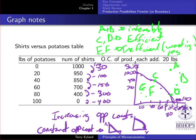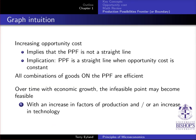The only way that we could achieve points outside here is if technology or something else improves. So as I mentioned, increasing opportunity costs implies that the PPF is not a straight line. We'd have that situation where it's got a shape like this and all combinations of the goods on this PPF are efficient. And over time with economic growth, some of these infeasible points over here may become feasible because of often increases in technology or simply an increase in the population size may do that as well.